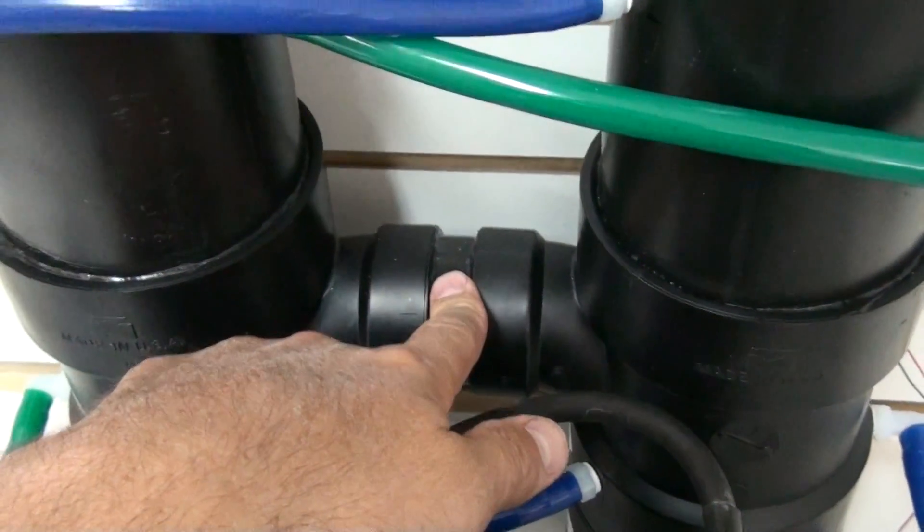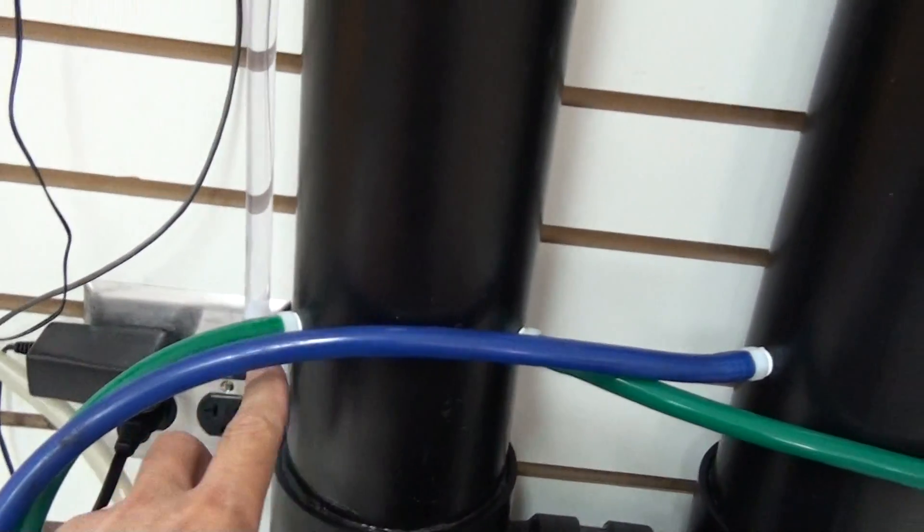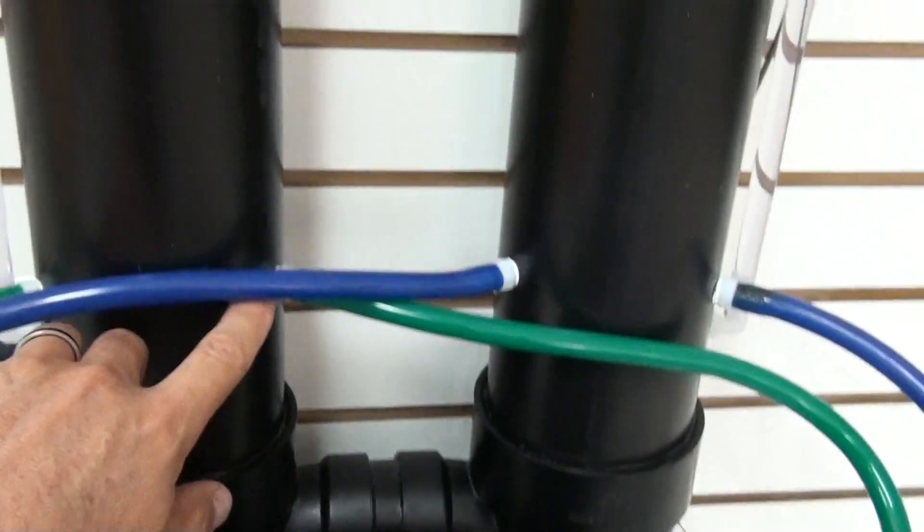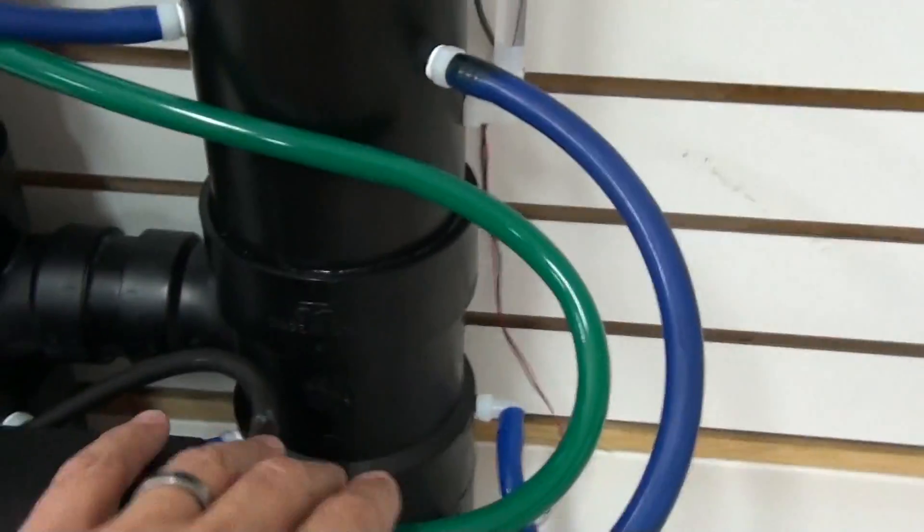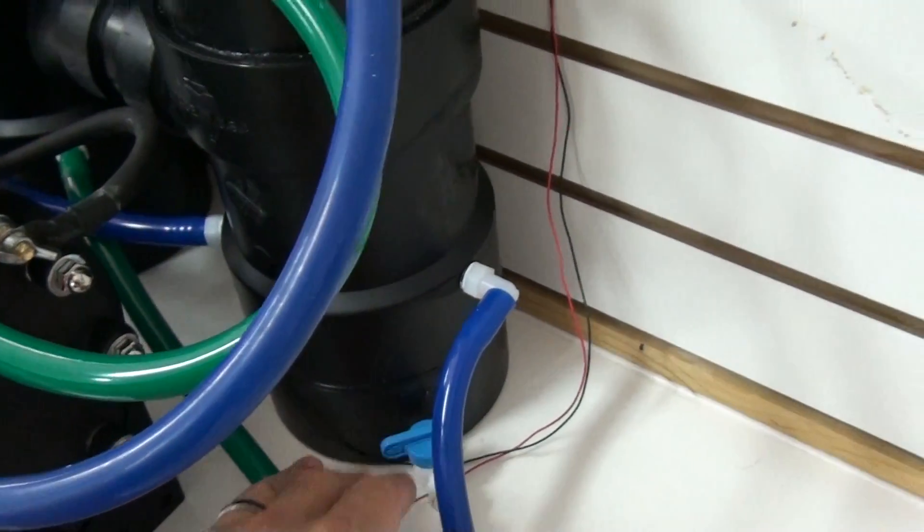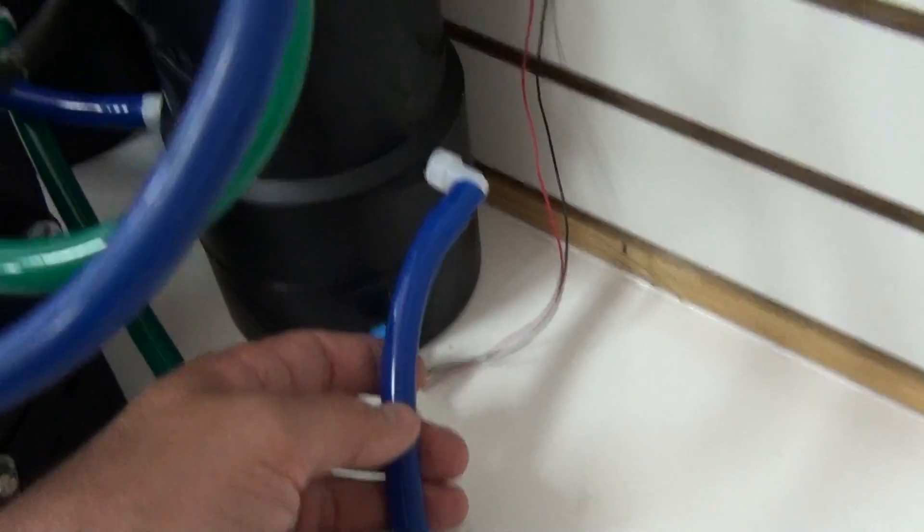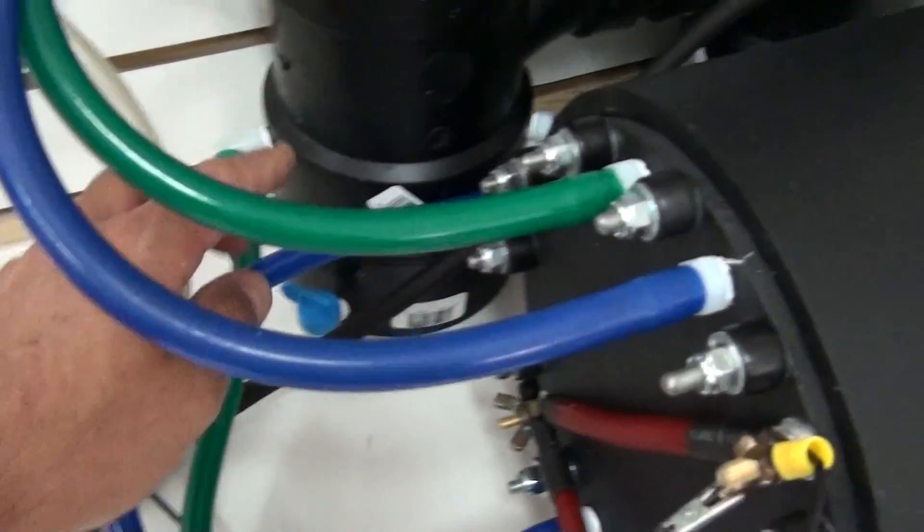Two tanks are joined at the bottom. Hydrogen enters in above the joint here, oxygen enters in above that joint there, and water comes out the bottom of the tanks back into the cell.